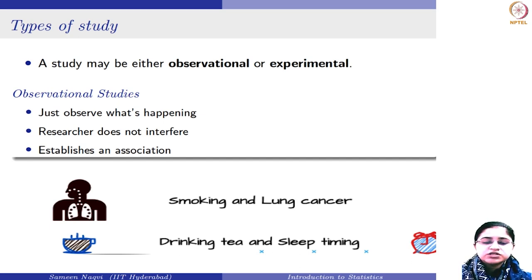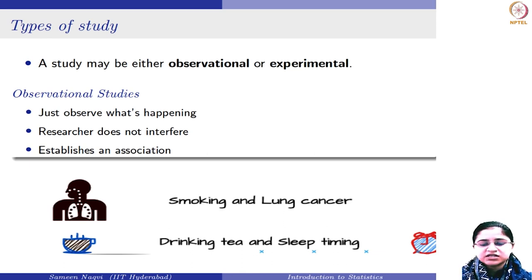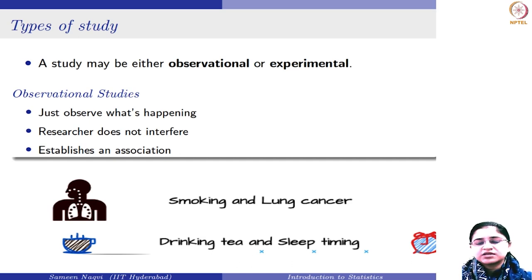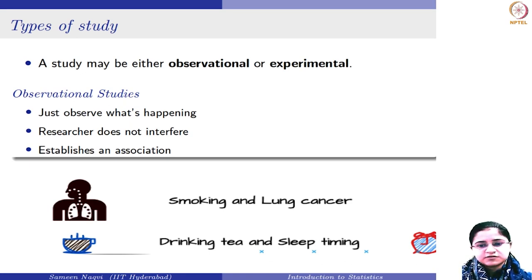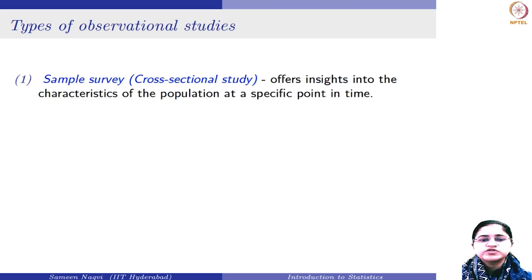In the first study, I collected a group of individuals, divided them, and asked about their smoking habits in the past — collecting data about past events. In the other study, I collected a group of individuals and simultaneously asked them about their tea consumption and sleep timing. So you can see there is a difference in how these studies were conducted. Based on this, observational studies can be categorized into three major types. The first is the sample survey, also referred to as the cross-sectional study, which is the most commonly used observational study.